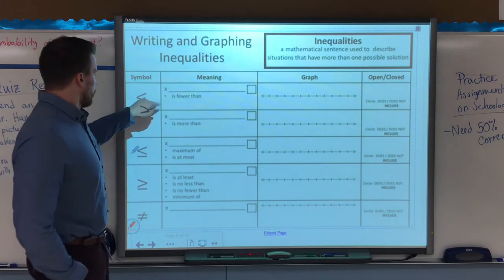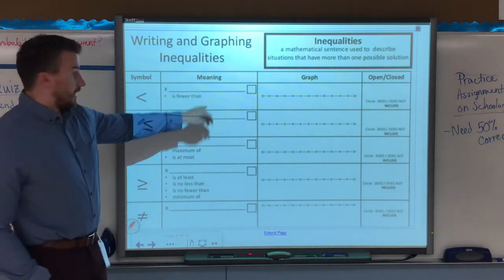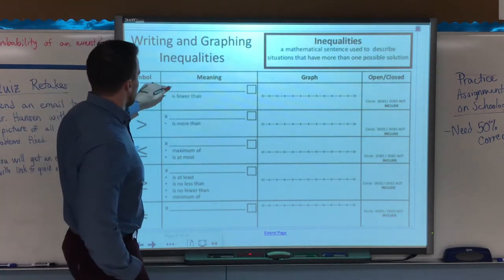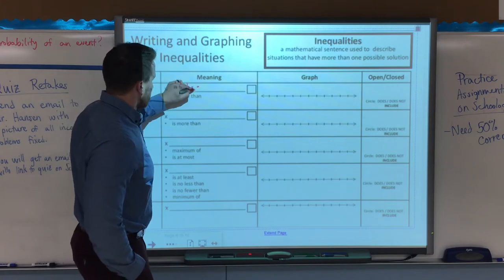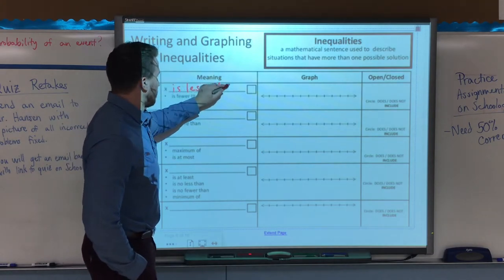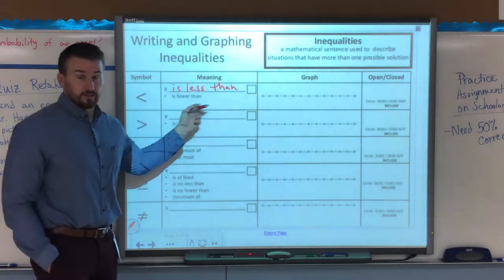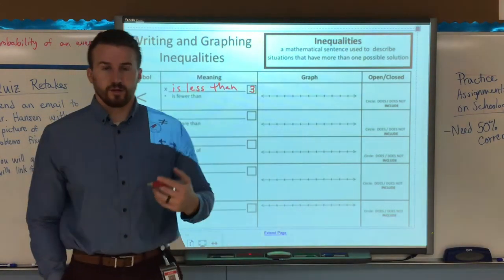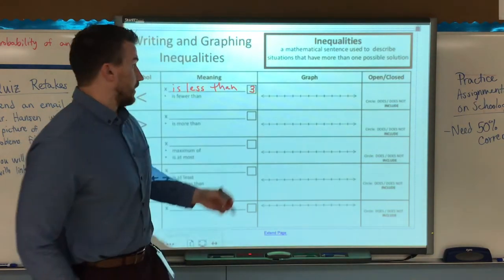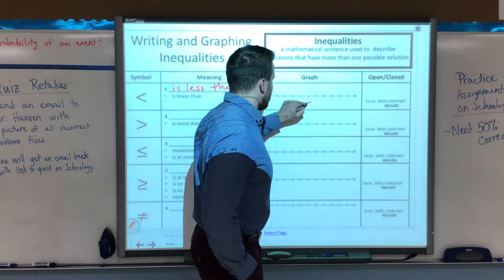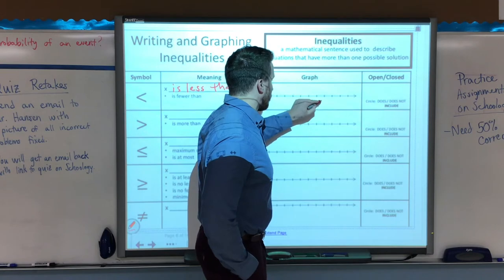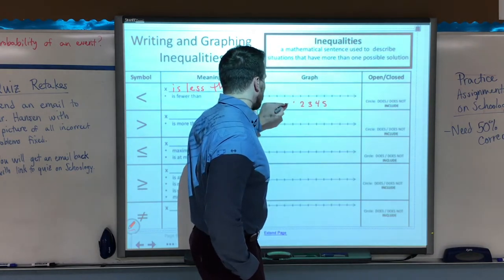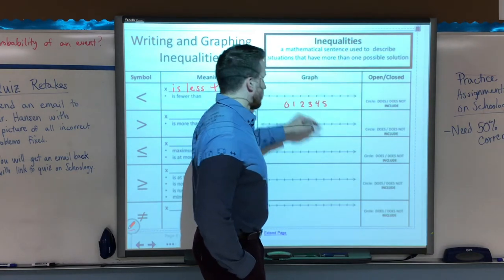So when it's less than, the meaning of that is x is less than, or in other words you might see is fewer than, and we can put any number here, let's just put 3. So if you have an inequality where it says x is less than 3, on the graph here, I have my number line 3, 4, 5, 2, 1, 0, etc.